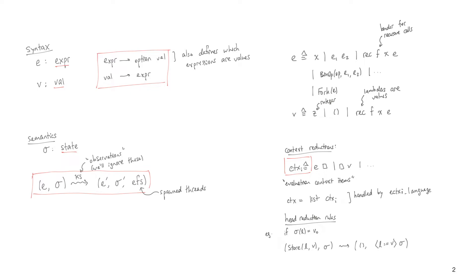Here I'll just give a quick example of evaluation context items with the two evaluation contexts related to applications. The one on the left says that whenever we have e and then some sub-expression, we can evaluate the right-hand side.